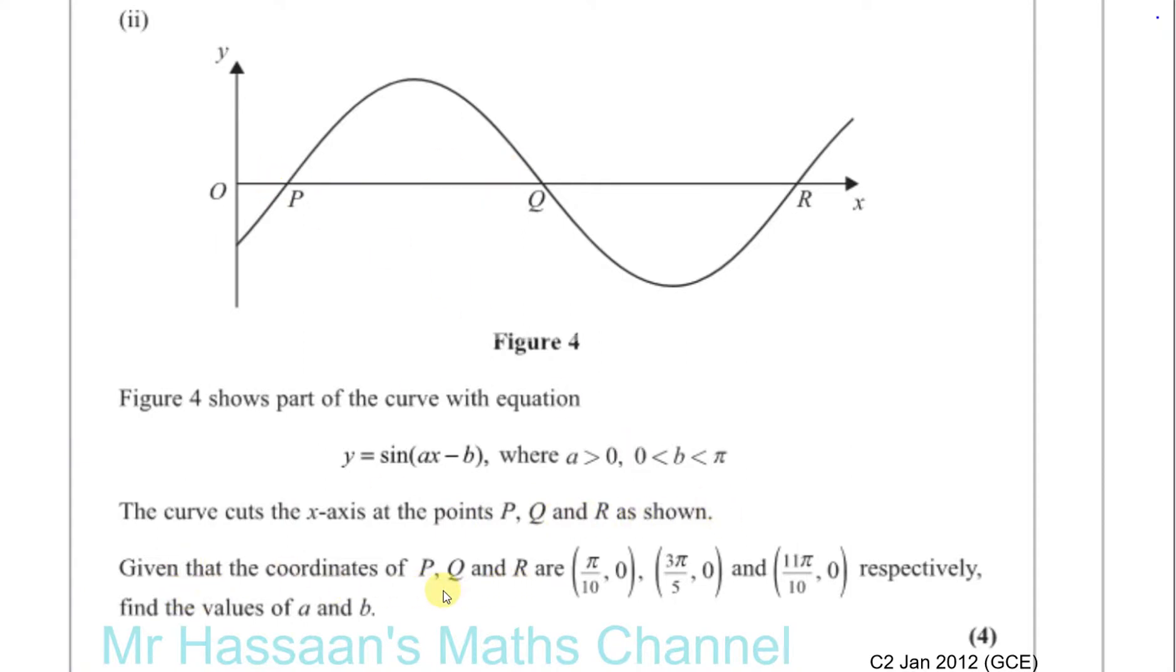Given that the coordinates of P, Q and R are pi over 10, 0, 3 pi over 5, 0 and 11 pi over 10, 0 respectively, find the values of A and B. So here, this x-value is pi over 10, this x-value here is 3 pi over 5, and the x-value here is 11 pi over 10.